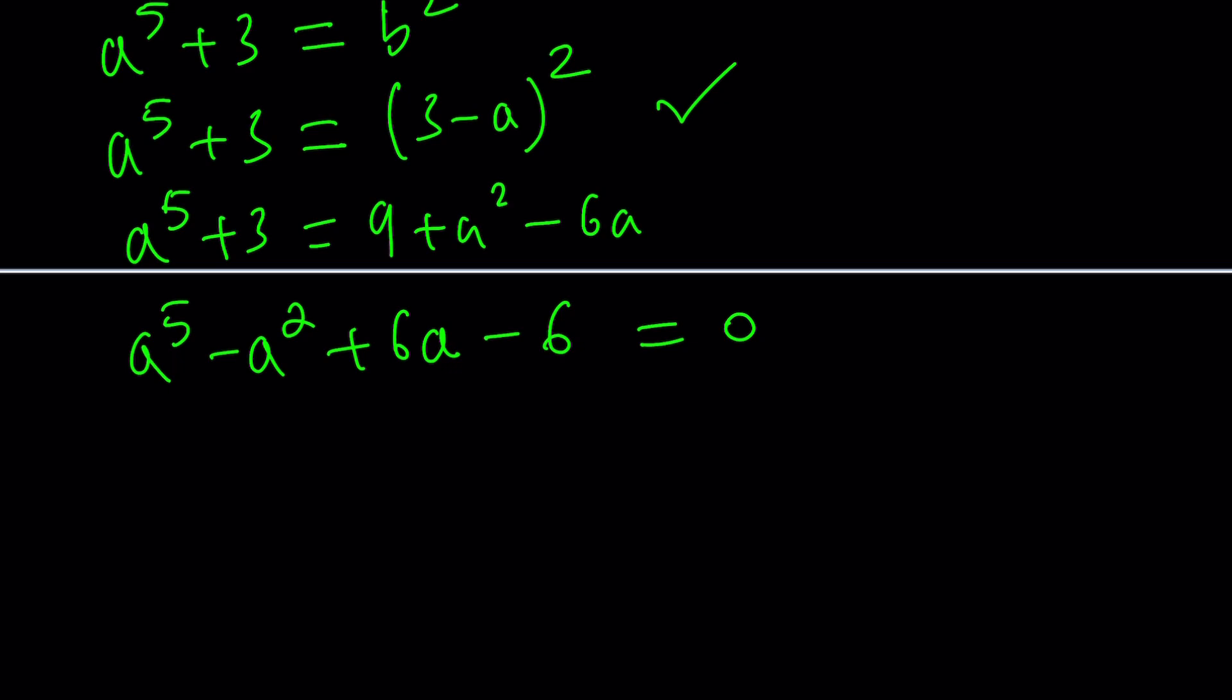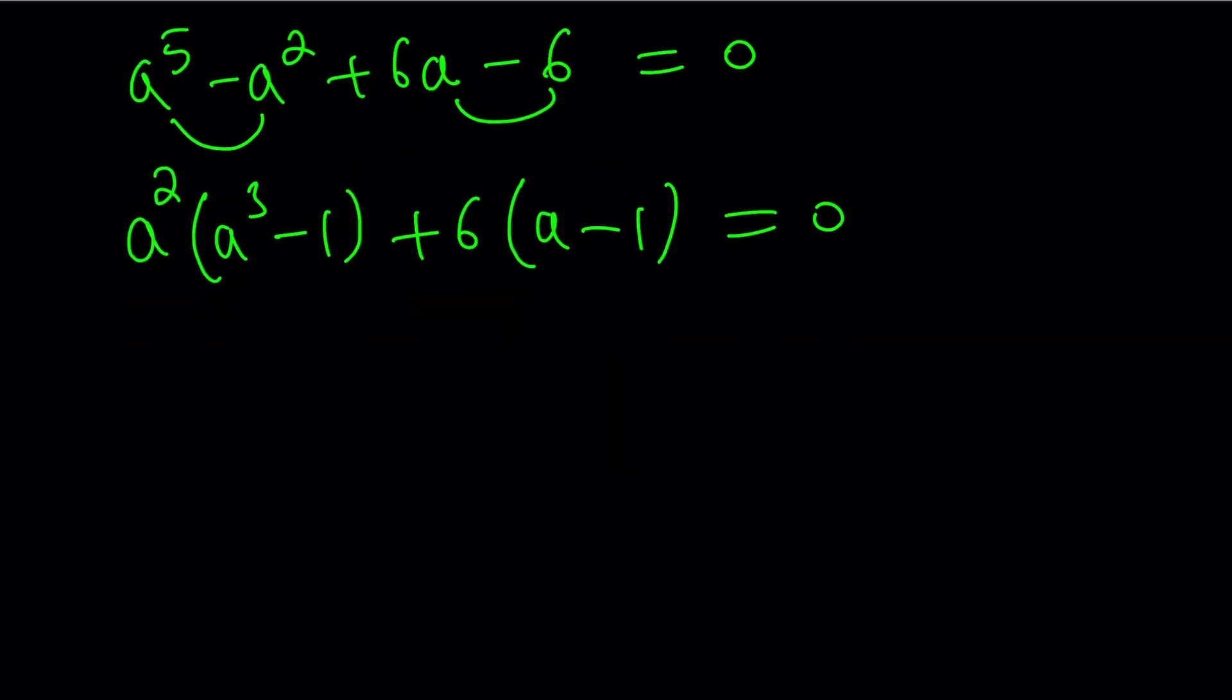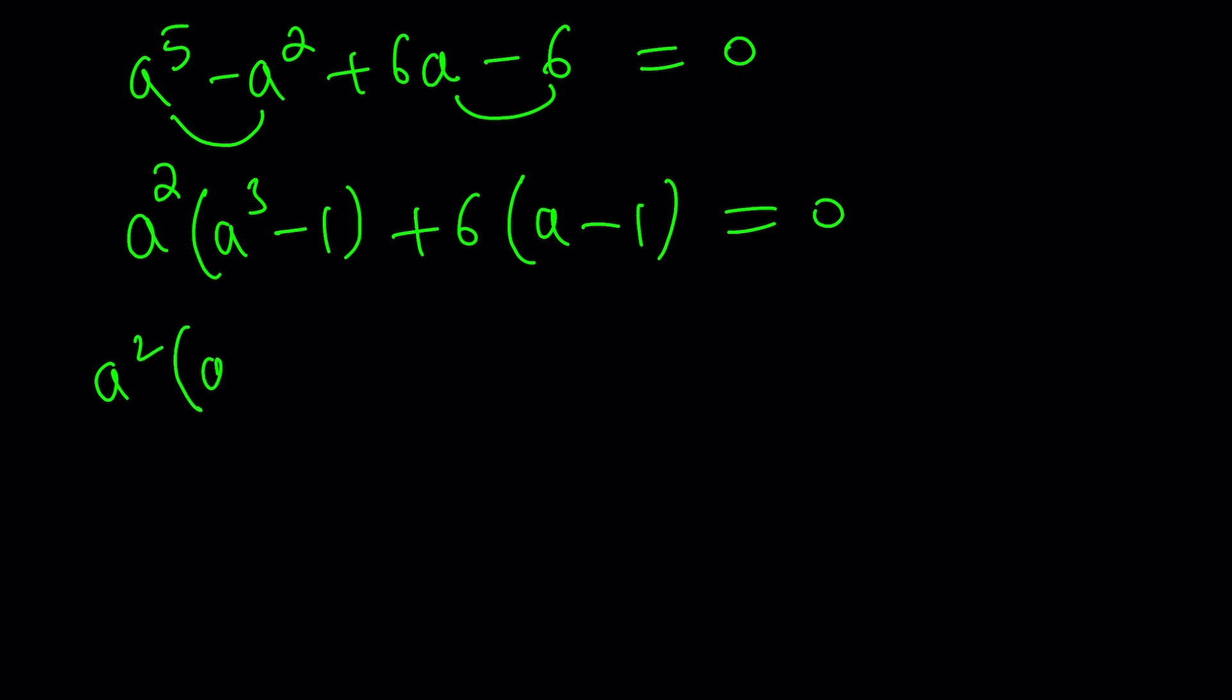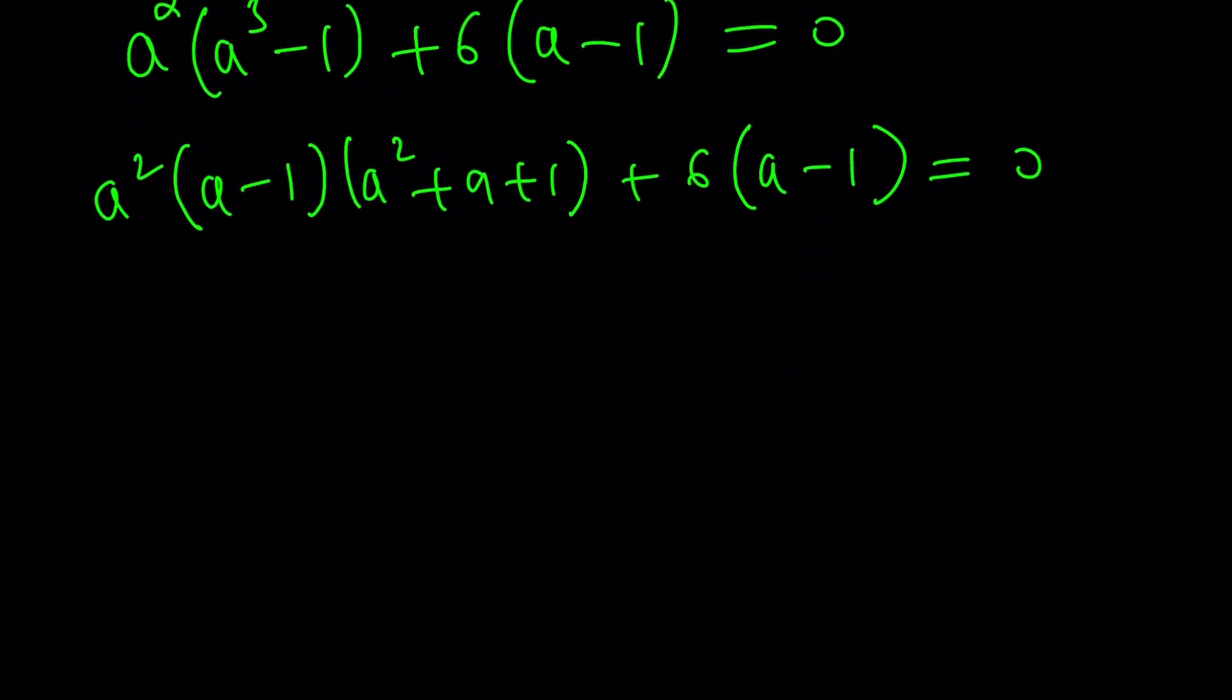So we can factor by grouping, because A equals 1 is a solution. We can factor out A squared and get A cubed minus 1 plus 6 times A minus 1, and now A cubed minus 1 is difference of two cubes. That can be factored like this. You probably know that. If not, please memorize. It's super-duper important. And then we can factor out A minus 1, which is a common factor. Of course, that verifies that A equals 1 is a solution. We already knew that. But if you distribute A to the fourth plus A cubed plus A squared plus 6 equals 0.